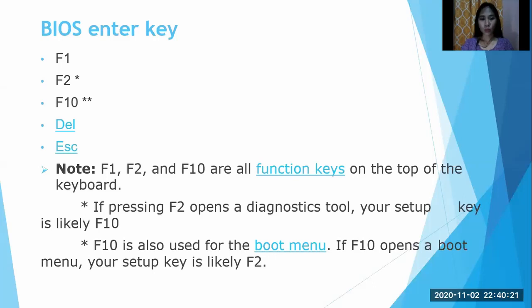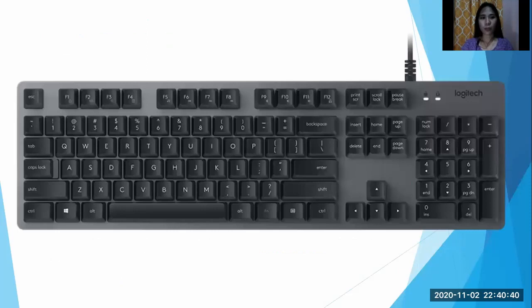F1, F2, and F10 are all function keys at the top of the keyboard. If pressing F2 opens the diagnostics tool, your setup key is likely F10. F10 is also used for the boot menu. If F10 opens the boot menu, your setup key is likely F2. This is where the function keys are located — at the top of your keyboard.